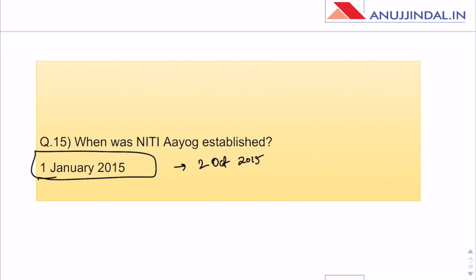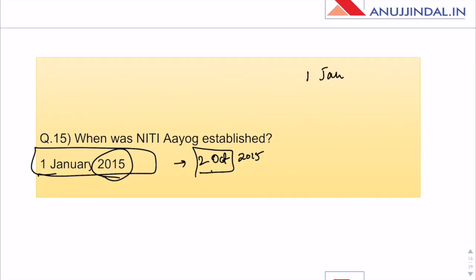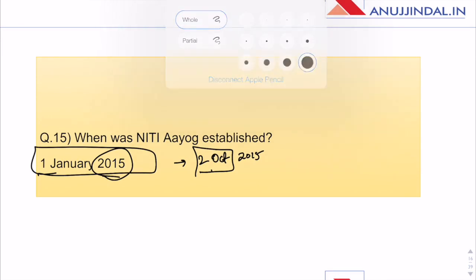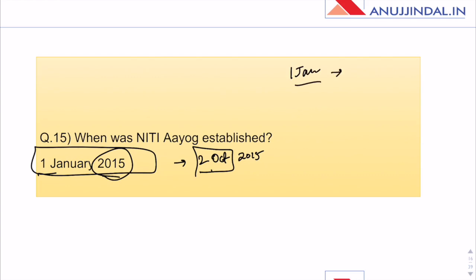NRLM is a flagship scheme under the Ministry of Rural Development. NITI Aayog was established on 1st January 2015 — someone mentioned 2nd October 2015 was also an option, causing confusion. It's difficult to remember exact dates, but you can divide schemes by common launch dates: 1st January, 2nd October, just after the budget, or 1st April.